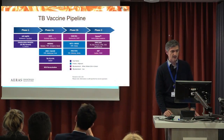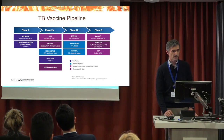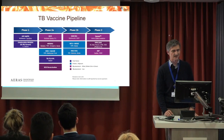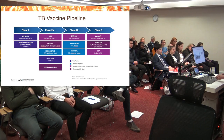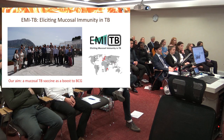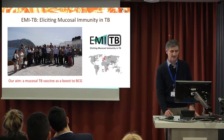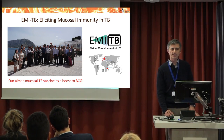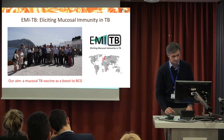Currently there are a dozen or so other vaccine candidates in different stages of clinical trials — all very positive and encouraging. However, we cannot just wait and hope that something will work. We need to continue to feed the vaccine pipeline with new candidates, new concepts, and new strategies. This is where our work — the EMI-TB consortium — comes in. We are a major international consortium for TB vaccine development led here at St. George's. Our key aim is to develop a mucosal TB vaccine as a boost to BCG, meaning a vaccine that is inhaled rather than injected, delivered through mucosal surfaces such as the mouth or nose.